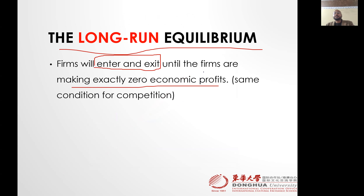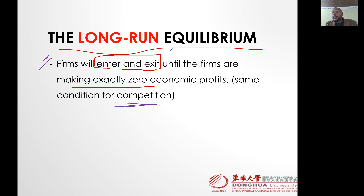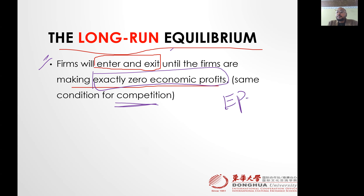Now let's talk about the long run. In the long run, firms will enter or exit the market freely — there is free entry and exit. This rule applies to the perfectly competitive firm as well. Firms will enter or exit the market until nobody is making economic profit — that is, until economic profit equals zero.